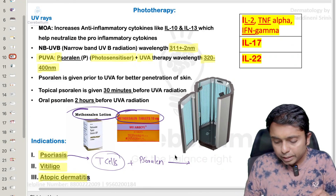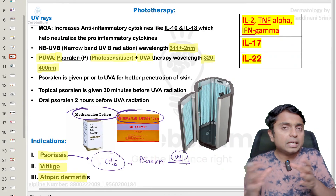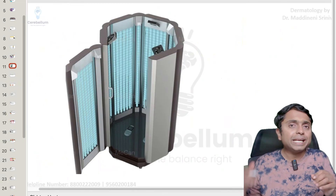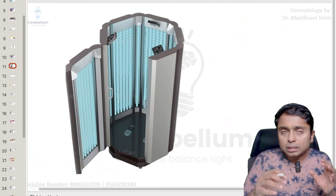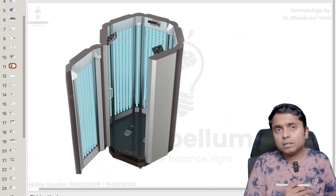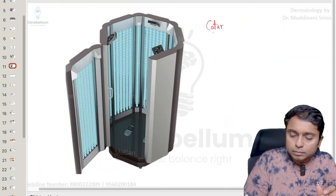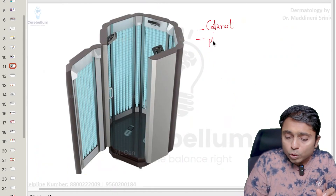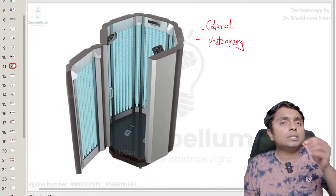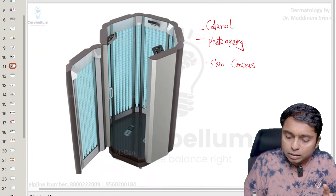After giving psoralen, the patient gets sun exposure or comes to the OPD for treatment with ultraviolet rays. This is the phototherapy chamber into which the patient has to go inside — a very big chamber with tube lights all around emitting UVB or UVA rays. The patient has to be unclothed and must cover their eyes and genitalia, because important adverse effects include cataract formation related to the eyes, photoaging of the skin with prolonged UVA exposure, and an increased risk of various skin cancers.